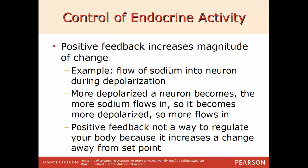Positive feedback increases the magnitude of change — for example, the flow of sodium into a neuron during depolarization. The more depolarized the neuron becomes, the more sodium flows in, making it even more depolarized, and so on. Positive feedback is not a way to regulate the body because it increases change away from a set point. To control something turning on or off, the body uses negative feedback — just like a home thermostat that turns the heater off once the set point temperature is reached.